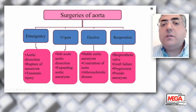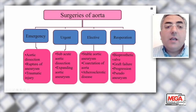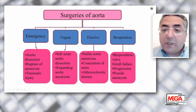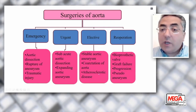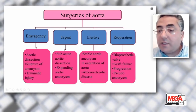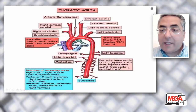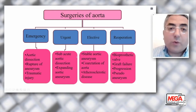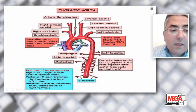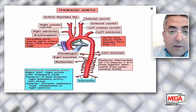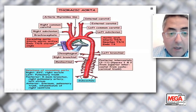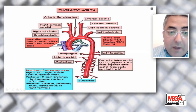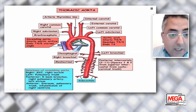Median sternotomy is used for aortic diseases proximal to the left carotid artery; diseases distal to this point require left thoracotomy or thoracoabdominal incision. Surgeries of the aorta are emergency, urgent, elective, or re-operation. Emergency indications include dissection, ruptured aneurysm, and traumatic injury. Urgent indications include subacute dissection and expanding aneurysm. Elective indications include stable chronic aortic aneurysm, coarctation of the aorta, and atherosclerotic diseases. Re-operations include failed bioprosthetic valve, graft failure, progression from first to second-stage operation such as elephant trunk or frozen elephant trunk, and pseudoaneurysm.